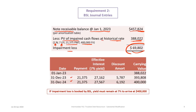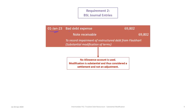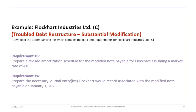In the amortization table, with two payments left at $21,375 and a 7% yield, the effective interest rates are shown, going from the new present value of $388,022 to $400,000. If BSL books the impairment, the yield must stay at 7% to arrive at the $400,000 final amount. On January 1st, we debit bad debt expense $69,802 and credit note receivable to end up with the correct value, recording it as an impairment on restructured debt from Flockhart. No allowances are used; the modification is substantial and considered a settlement, not an adjustment.